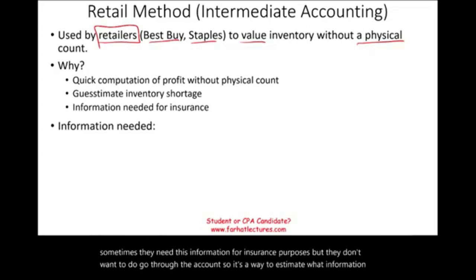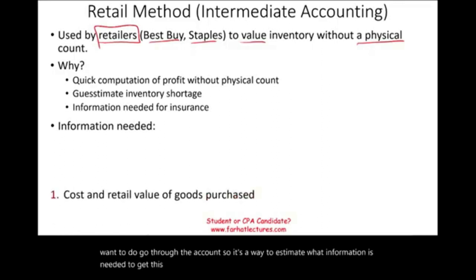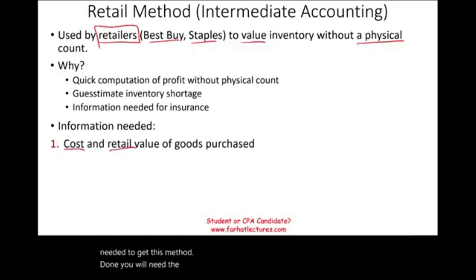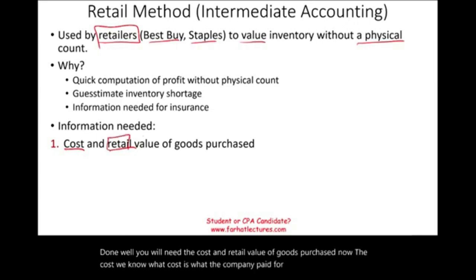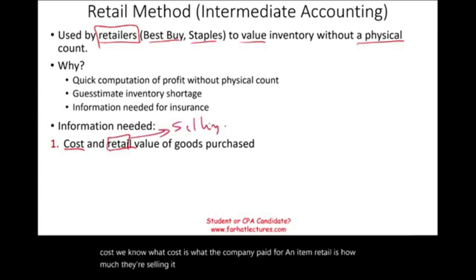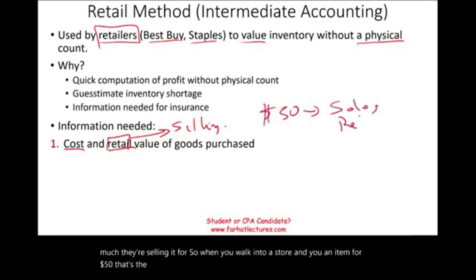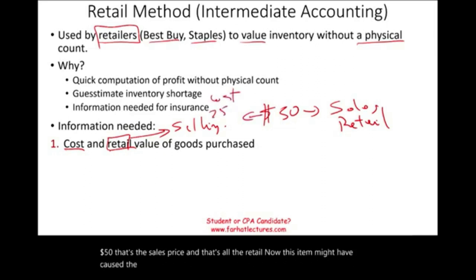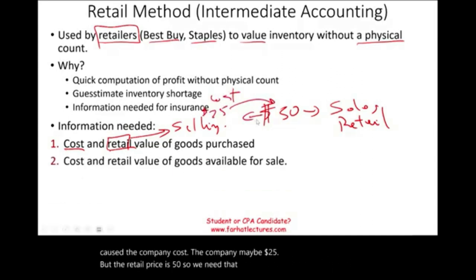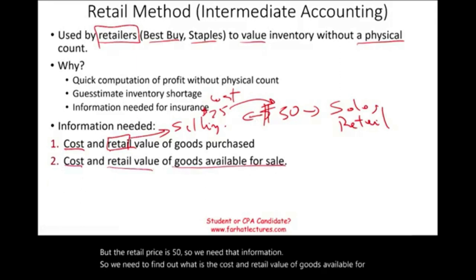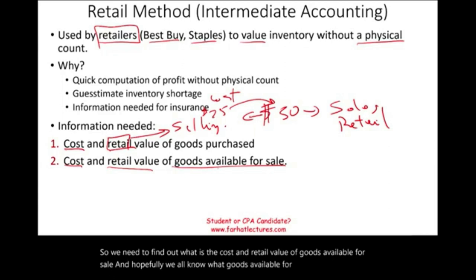What information is needed to get this method done? You will need the cost and retail value of goods purchased. Cost is what the company paid for an item; retail is how much they're selling it for. When you walk into a store and you see an item for $50, that's the retail. This item might have cost the company $25, but the retail price is $50. We need to find out what is the cost and retail value of goods available for sale, which is beginning inventory plus purchases.